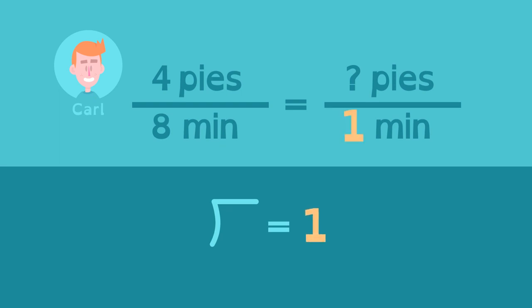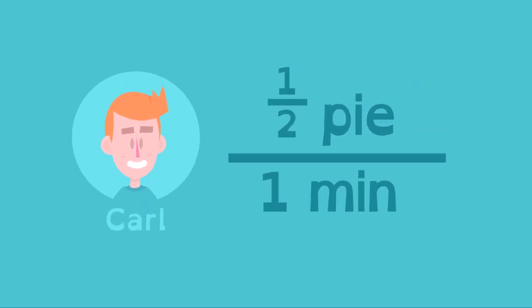To keep the fractions equivalent, we must also divide four by eight. Now we can see Carl's rate per minute. Carl's unit rate is half a pie per minute.